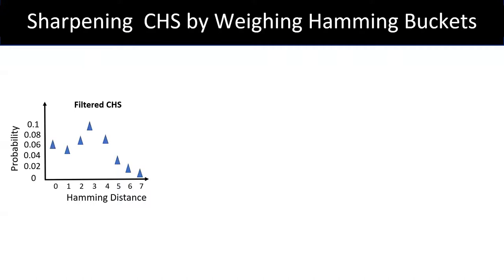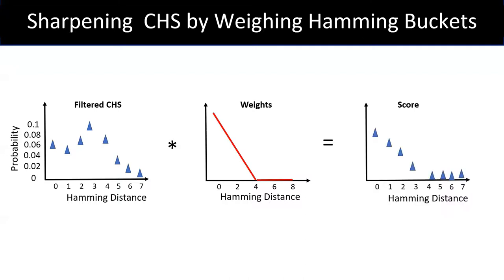To solve this problem, we can weigh contributions in the hamming spectrum. For example, neighbors that are close in hamming space can have a higher influence or a higher weight. By applying this weight, we compute the hamming score.